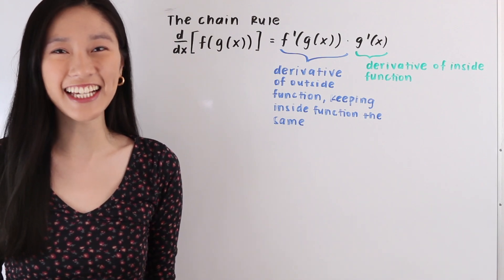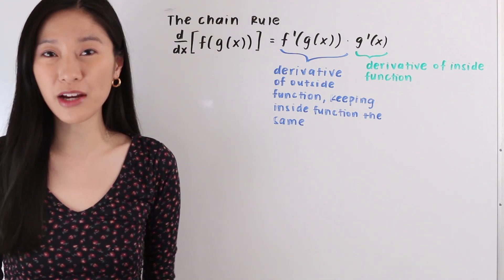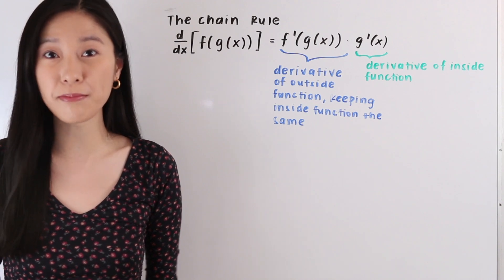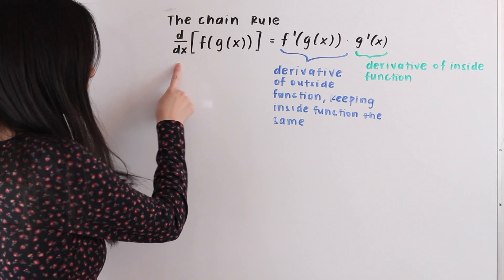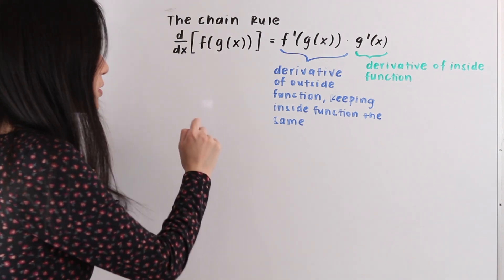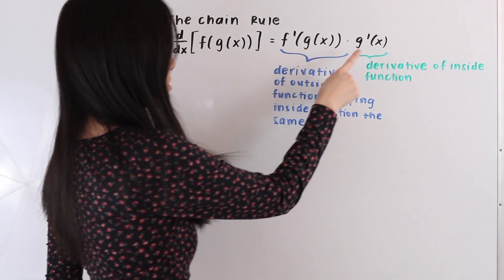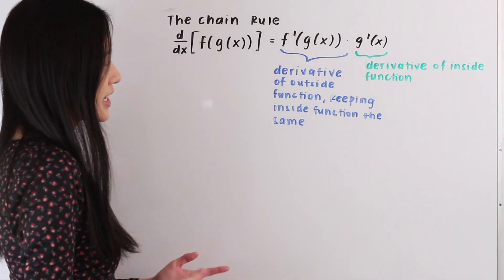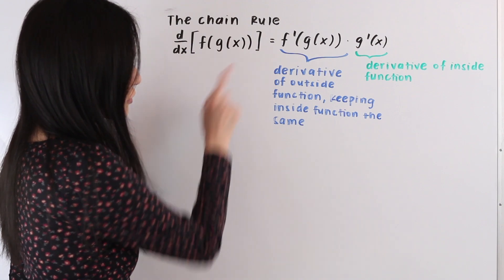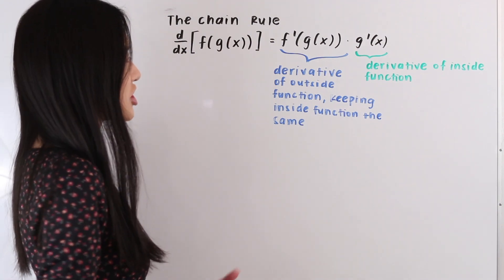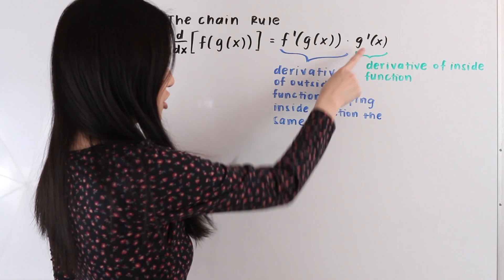Hi everyone, it's Janine here and in today's video we are going to be learning the chain rule, which is a rule that we use for taking derivatives of composite functions. The chain rule tells us that the derivative with respect to x of f of g of x is equal to f prime of g of x times g prime of x. We take the derivative of the outside function f, keep the inside function g of x the same, and multiply by the derivative of the inside function.